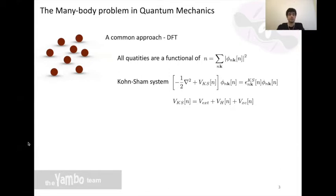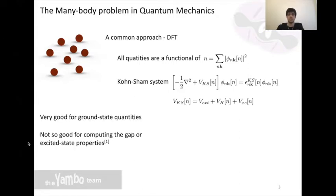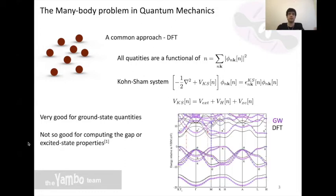While Kohn-Sham density functional theory is extremely useful for ground state properties, it often fails when we have to go beyond and access excited state quantities, like the many-body quasi-particle gap and absorption.